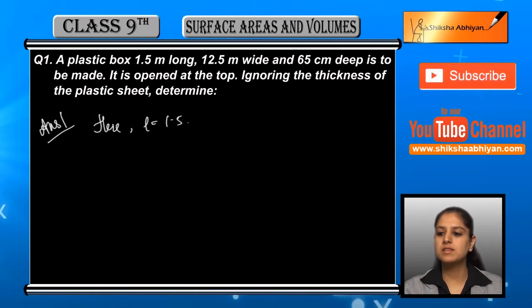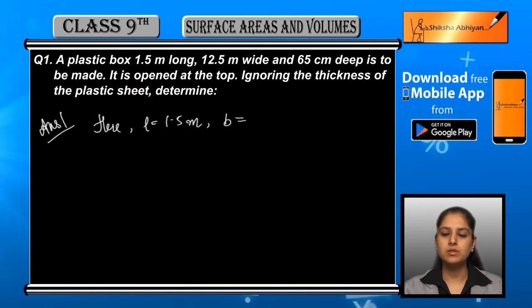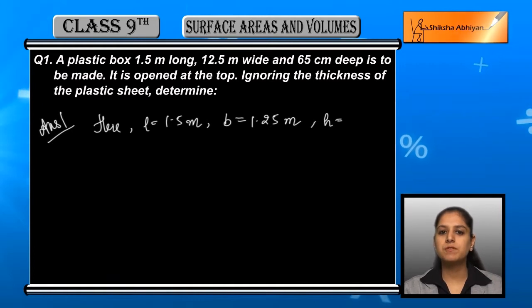We will convert to meters, so 65 centimeter equals 0.65 meter. Now for a cuboidal box...